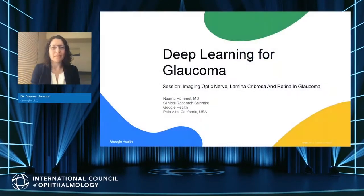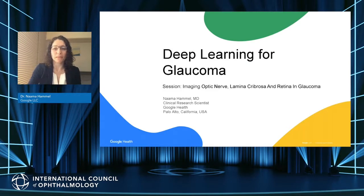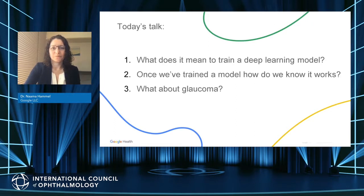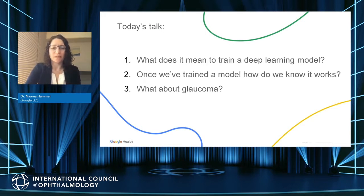Hello everyone. My name is Nama Hamel. I am a glaucoma specialist by training, and at Google I work on a team that applies deep learning to medical images. Today I'd like to talk about three things: what it means to train a deep learning model, how to know if it actually works, and how this applies to glaucoma. In the past few years there has been a lot of interest in machine learning models for healthcare — the number of publications is up by a factor of 138 since 2013. The same trend exists for glaucoma: searching artificial intelligence in glaucoma on PubMed yields 244 results.